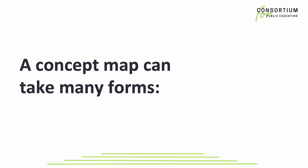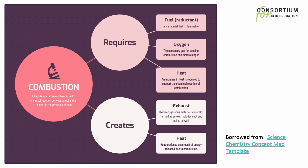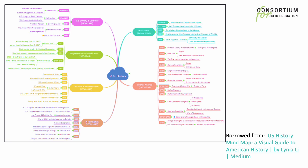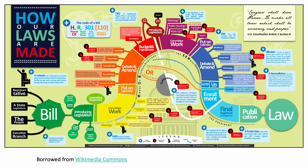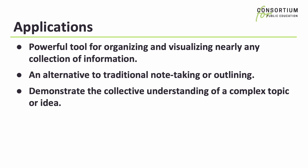A concept map can take many forms. This version on combustion has fewer parts and is displayed as a horizontal hierarchical chart, while this concept map on US history has lots of details and branches out in many directions. This version brings in lots of graphic design as it displays the flow of how a bill becomes a law. There are hundreds of applications for concept maps. It's a powerful tool for organizing and visualizing nearly any collection of information. It's an alternative to traditional note-taking or outlining, and it demonstrates the collective understanding of a complex topic or idea.